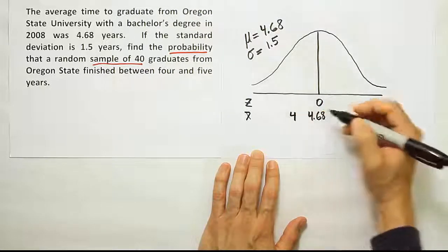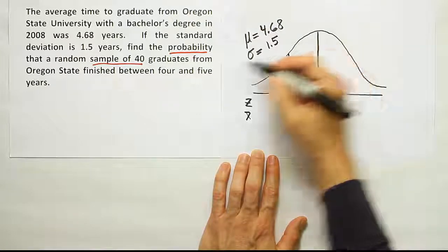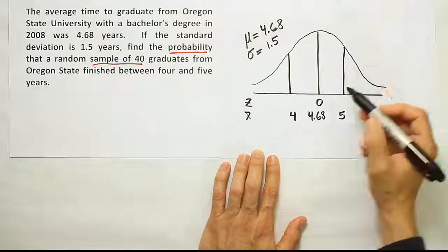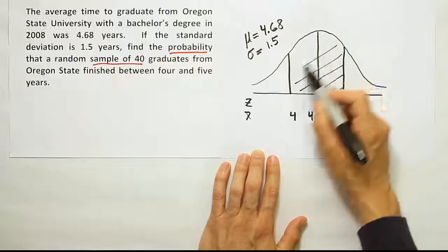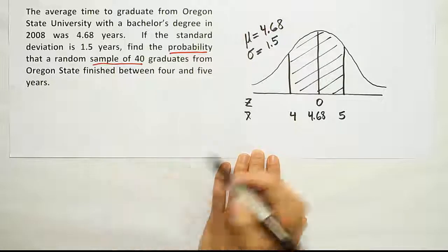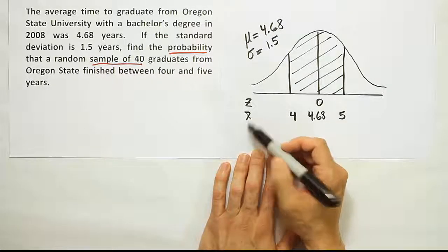4 is on the left of 4.68 and 5 is on the right of that. So the probability that the average for this group of 40 is between 4 and 5 years. It's going to be looking for the area between those two numbers, so I'm going to shade them. I've shaded the area between 4 and 5 years. We're looking for the sample of 40 to have an average between those two numbers. That's why I've labeled this x bar.